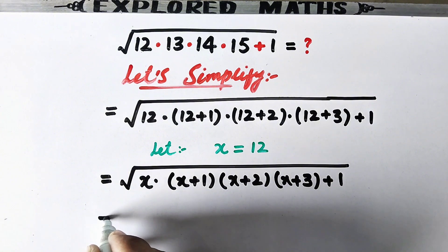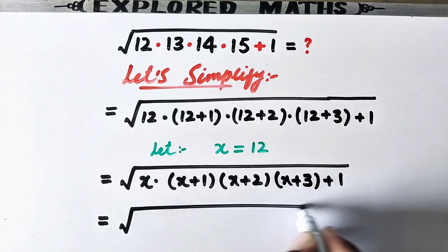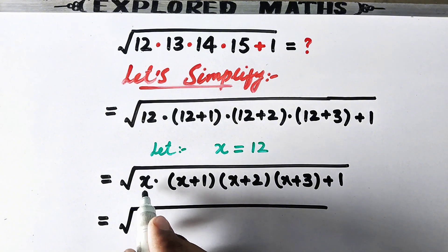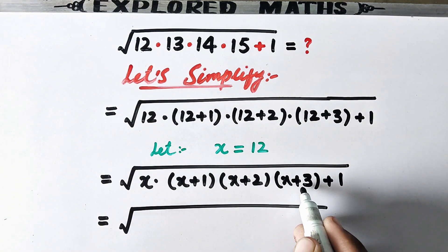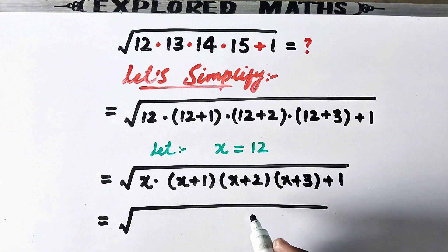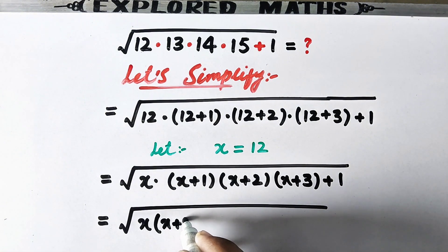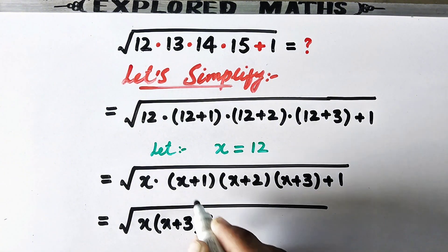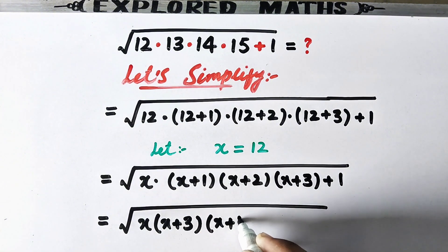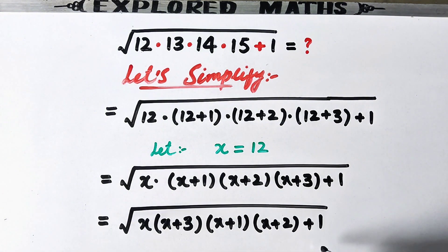In the next step we will relate x with x plus 3, and x plus 1 with x plus 2. So here we will write x times x plus 3, and x plus 1 times x plus 2, plus 1.